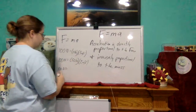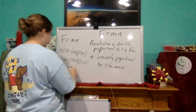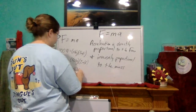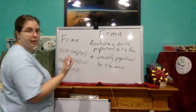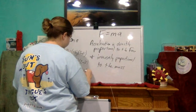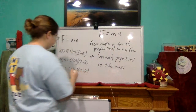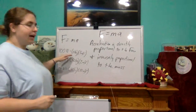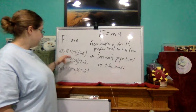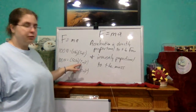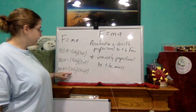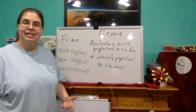What if I decrease the mass to 10 kilograms? So 100 newtons divided by 10 kilograms gives us 10 meters per second squared. So whatever I did to the mass, the opposite occurred to the acceleration. I increase the mass, acceleration decreases. I decrease the mass, acceleration increases.